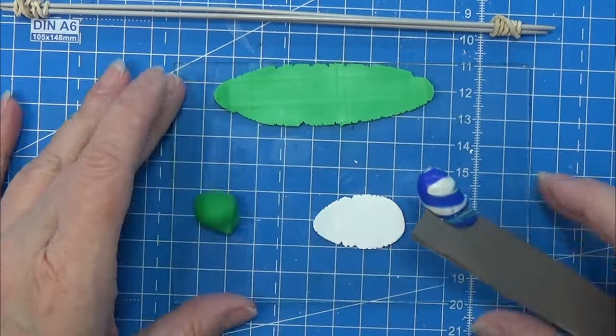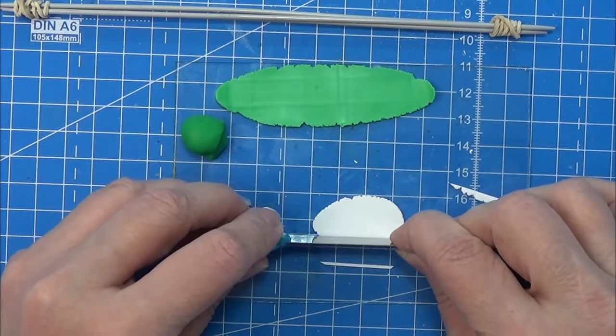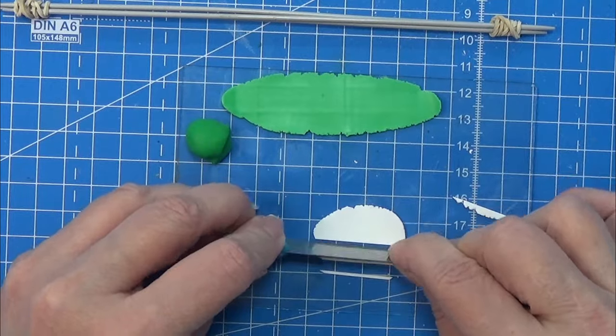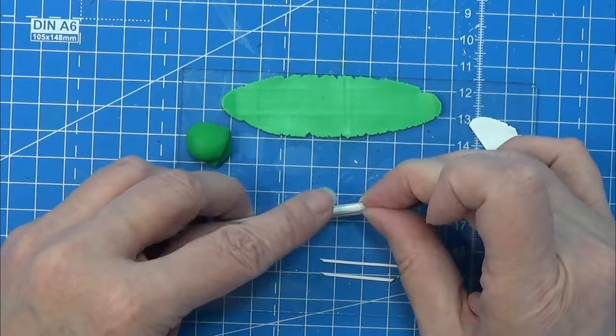So I rolled the light green and the white here out on setting eight. That is the second smallest on my pasta machine, and from the white I am cutting small strips like this.